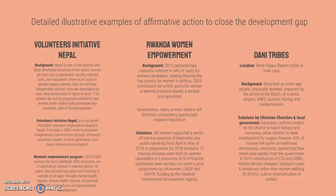Finally, we have the Dani Tribe, located in the Baliem Valley of West Papua, Irian Jaya. They are described as stone-age people who are physically isolated and have been impacted by the arrival of the Dutch, science, religion, World War II, tourism, mining, and modernization. Despite these many influences over a long period of time, they still remain fairly traditional in their practices and cultures.